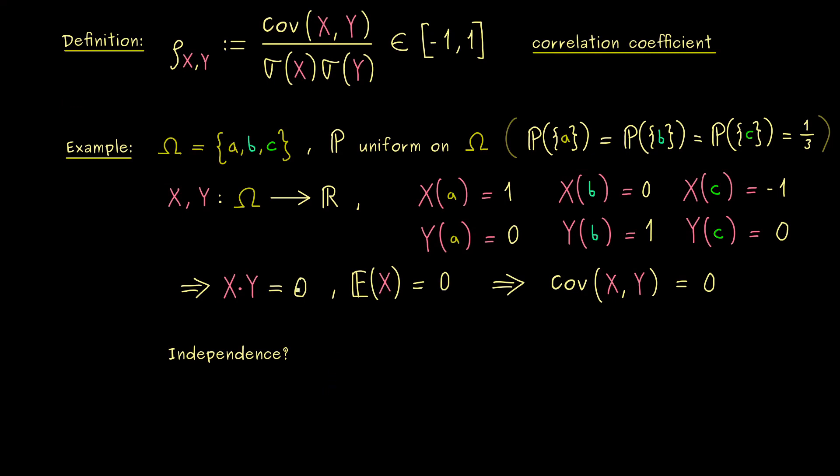Therefore, now the remaining question is, what is about the independence? And there you have to recall, what does it mean that two random variables are independent? It simply means that the two events, X is less or equal than x and Y is less or equal than y, are independent events.